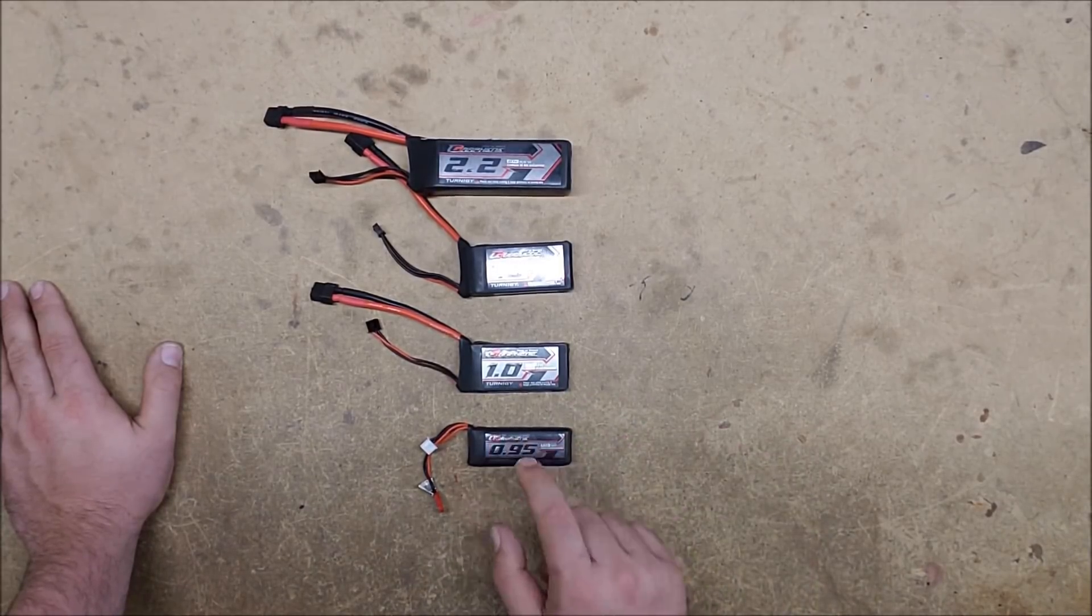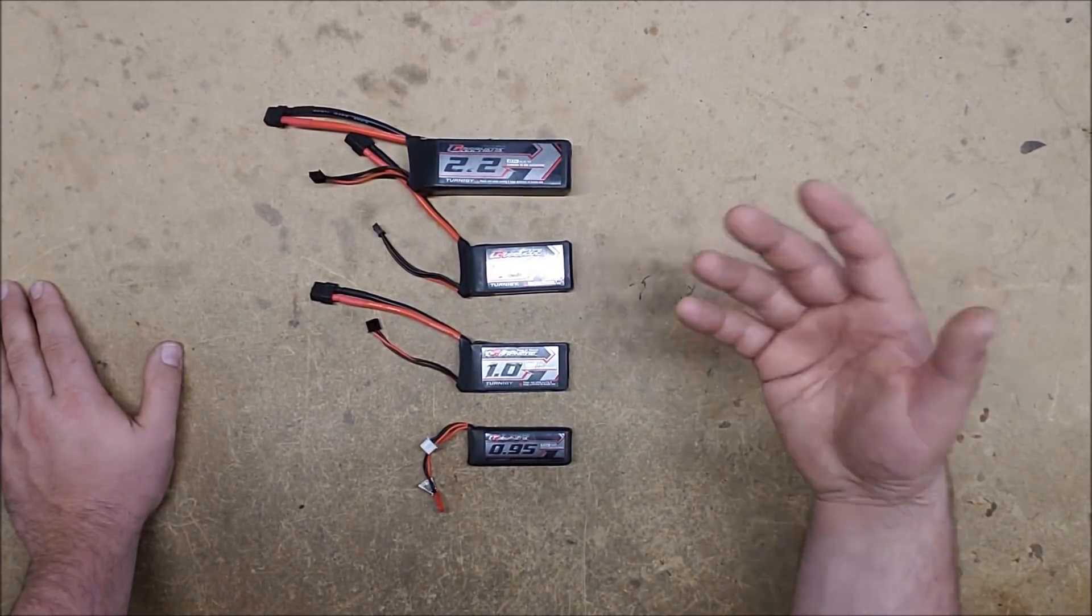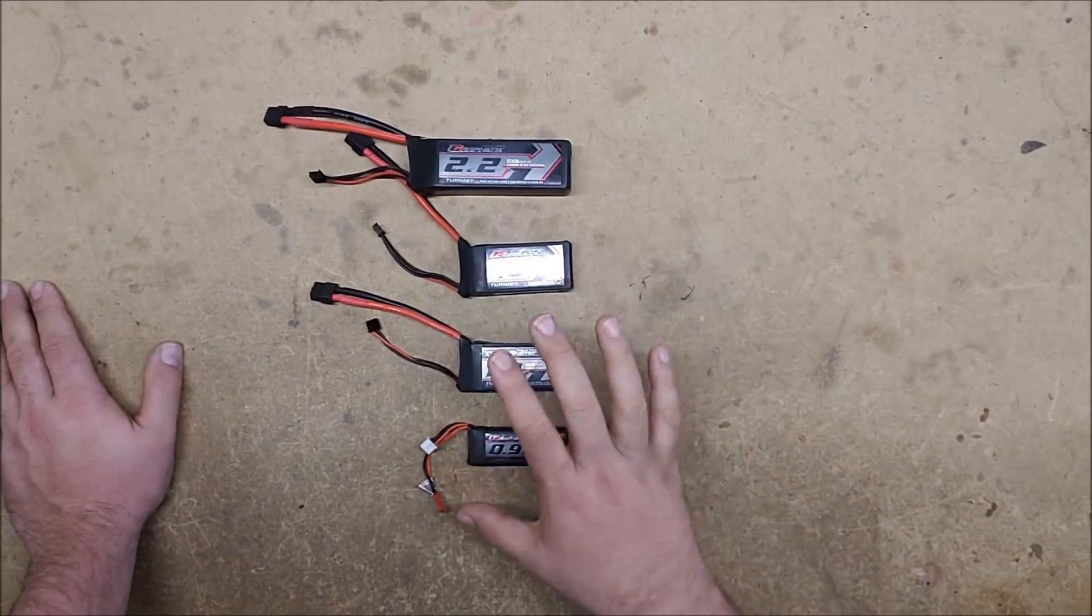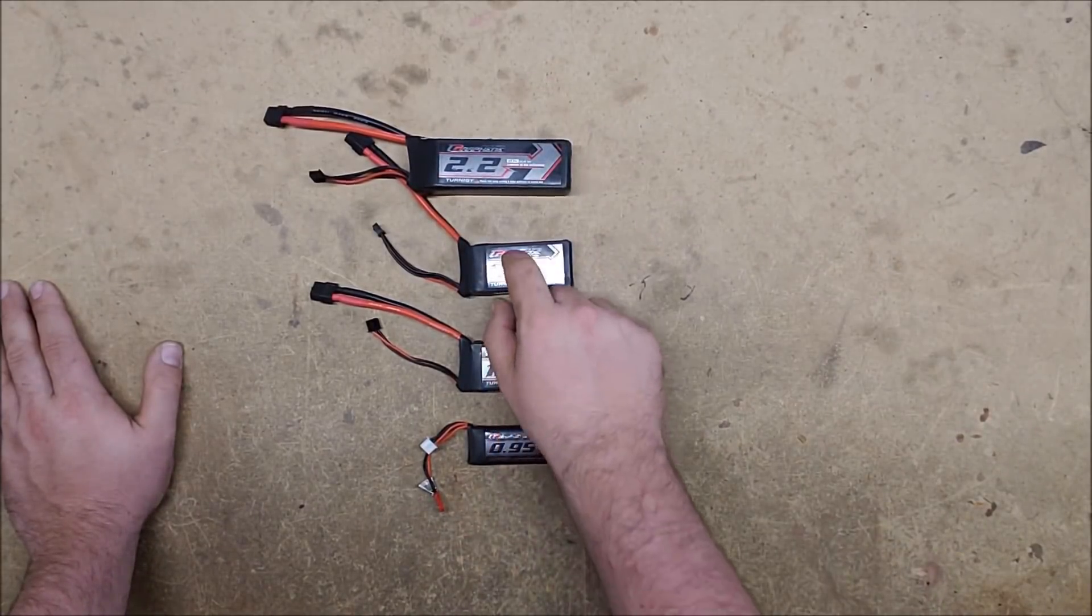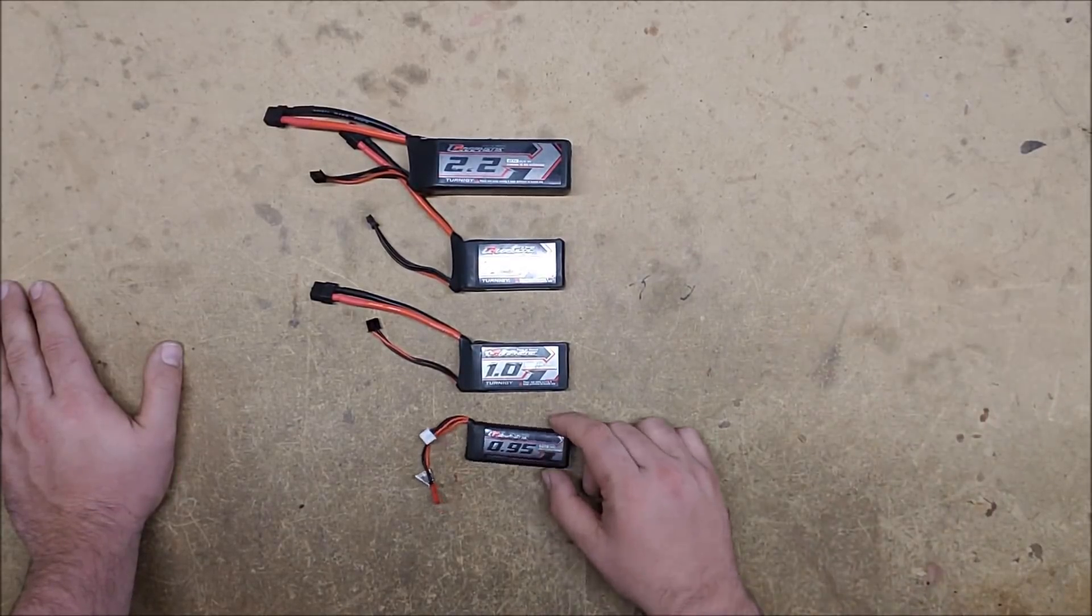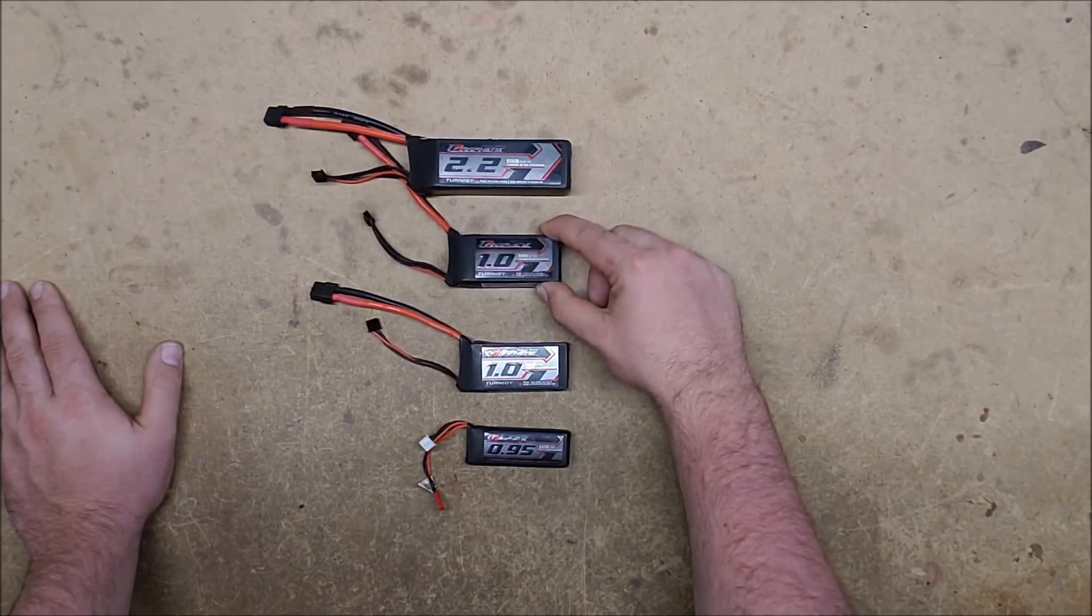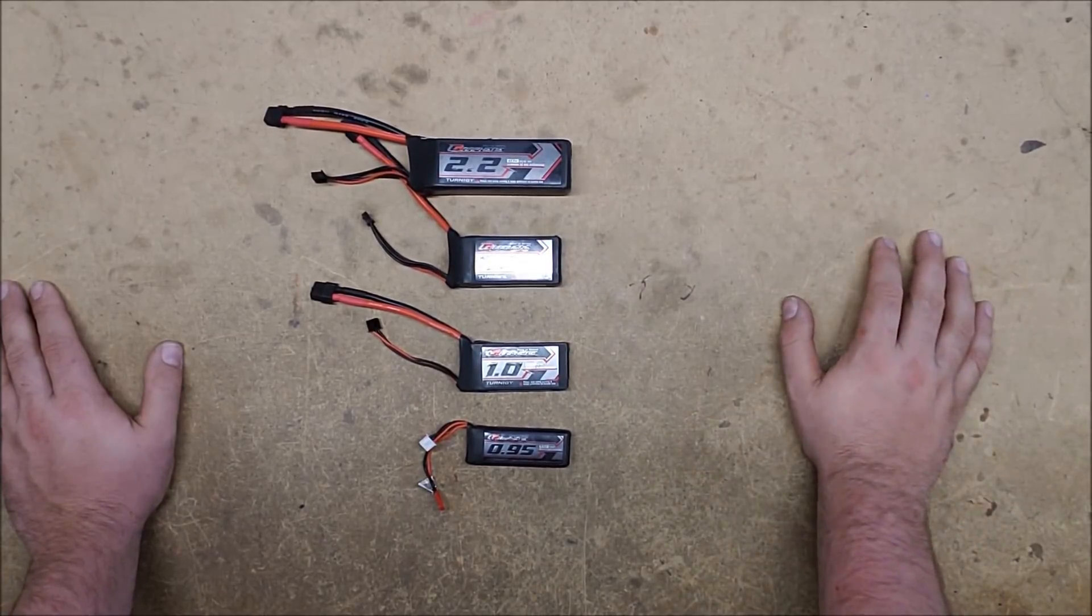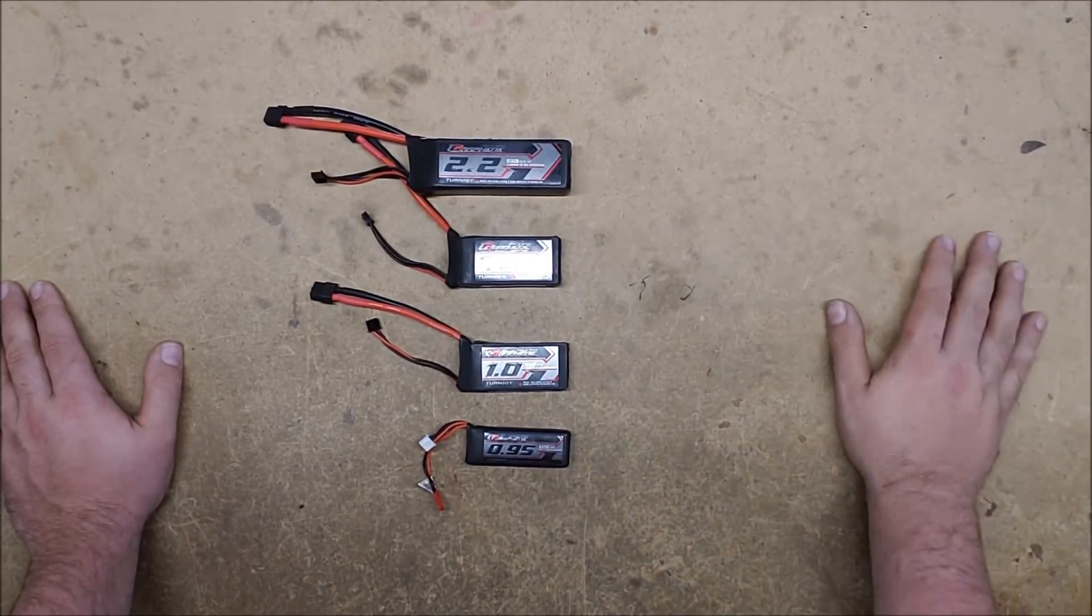Every single cell is 3.7 volts in most different lipos. There are also ones that are 3.2 and so you'll get slightly different numbers. But all of these ones and most of the ones that you're going to see are going to be 3.7 volts per cell. So a 2S will be 7.4, a 3S will be 11.1, and a 4S would be 14.8. And they go up from there.